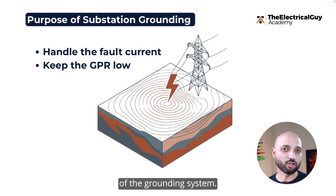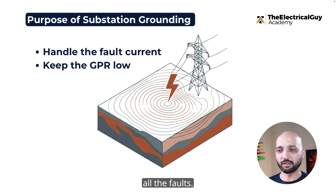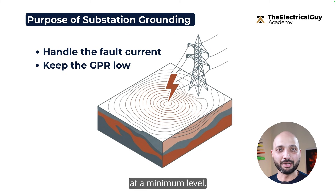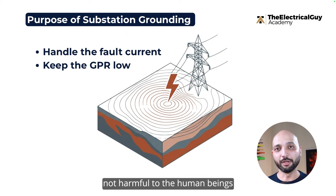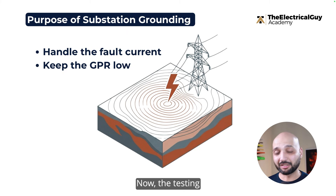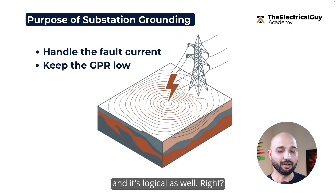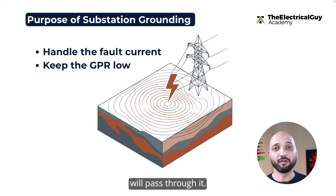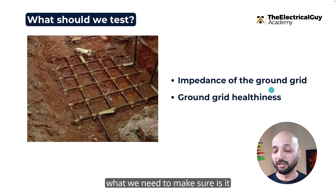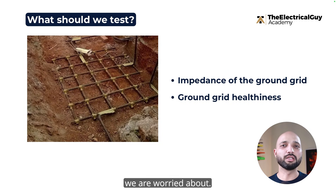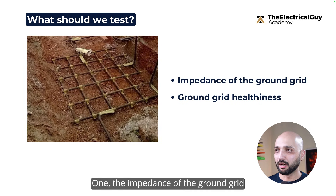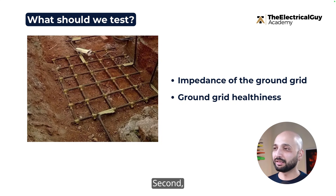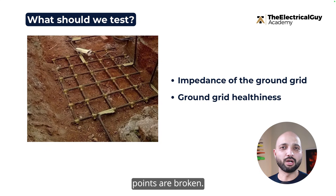The second purpose is that it should keep the ground potential rise, or GPR, under a certain limit. If it's not under the limit, we will have step and touch potential which is dangerous for living beings. So these are the two major purposes: first, it should divert ground faults; second, it should keep the ground potential rise at a minimum level — a level accepted by the standard and not harmful to human beings.